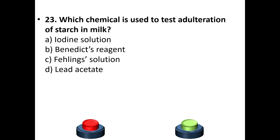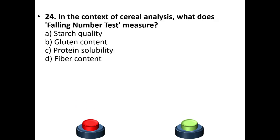Question 23: Which chemical is used to test adulteration of starch in milk? Options: iodine solution, Benedict's reagent, iodine solution, lead acetate. Your answer is option A: Iodine solution.